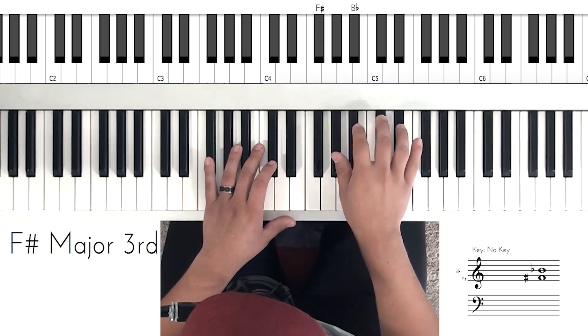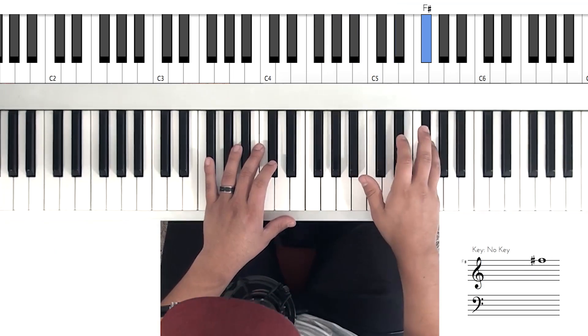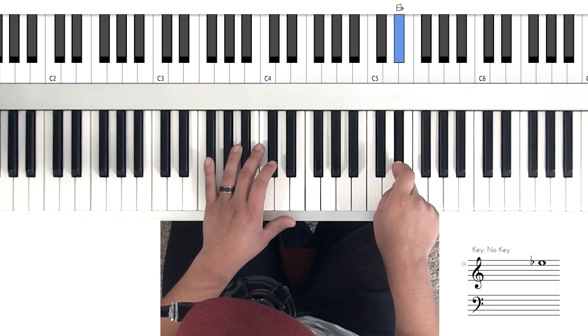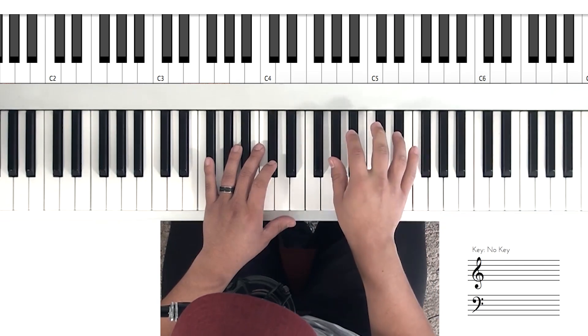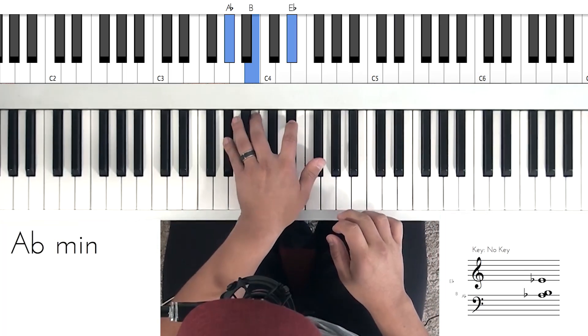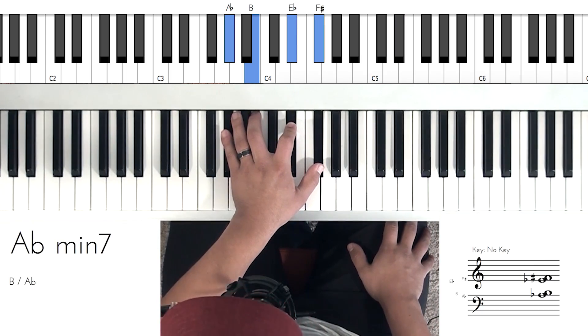Now when you hit the E flat note, your left hand is going to pair up. So you're going one, two, three, E flat. When you hit that E flat, your left hand is going to be on this beautiful A flat minor seven chord.